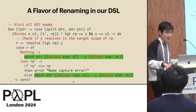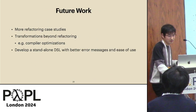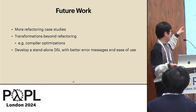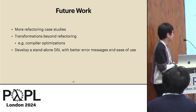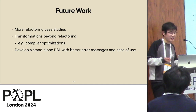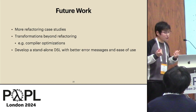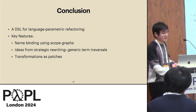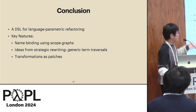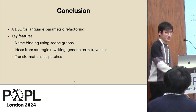Our work is ongoing — this is a short paper. We have tasks to fulfill. First, we need to do more refactoring case studies. Second, we are considering transformations beyond refactoring, for instance for compiler optimizations. Third, we aim to develop a standalone DSL with better error messages and ease of use, since the DSL is currently embedded in Haskell. To conclude, we present a DSL for language parametric refactoring with three key features: name-binding using scope graphs, a subset of generic term traversals, and transformations as patches. Thank you.